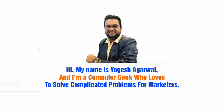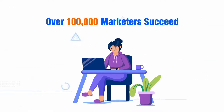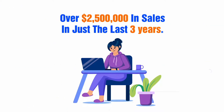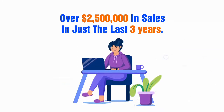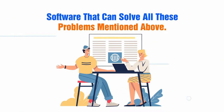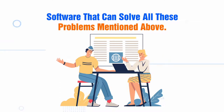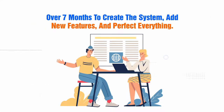My name is Yogesh Egerwal and I'm a computer geek who loves to solve complicated problems for marketers. I'm grateful to have helped over 100,000 marketers succeed with my simple software solutions, which has generated me and my company over 2.5 million dollars in sales in just the last three years. A few months back, I came up with the idea of software that can solve all these problems, and it took us over seven months to create the system, add new features and perfect everything.